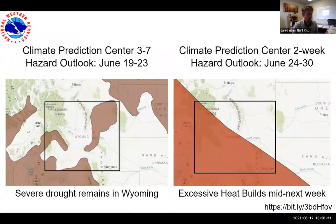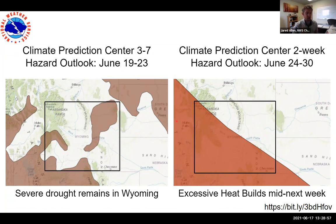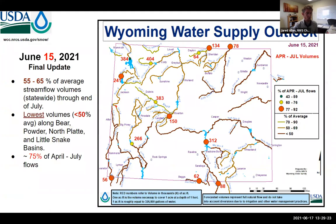To round out the forecast, the map on the left highlights where severe drought is ongoing across the state. As mentioned, it's likely that area will be expanding and may connect further to the south and southwest. There might be a little reprieve in the far northeast toward the end of the month, but central and south Wyoming will likely see further expansions. On the right side, more heat is building back in — the red area and south and southwest are favored for excessive heat, and really the entire state is going to be above normal, more so to the south and southwest. I'll turn it over to Jim Fahey with USDA-NRCS for the water supply outlook.